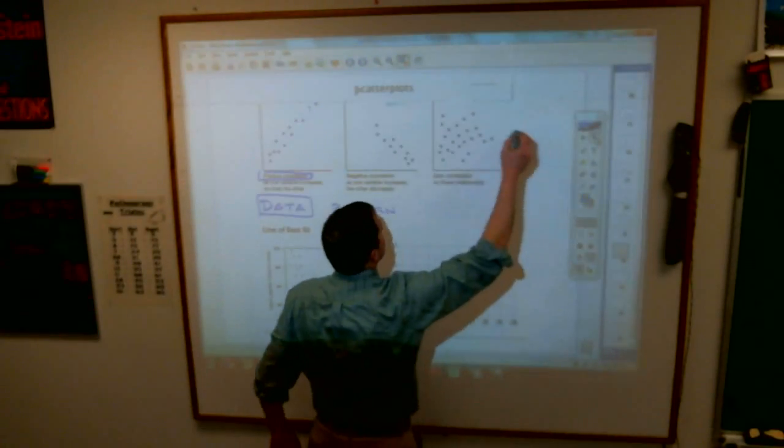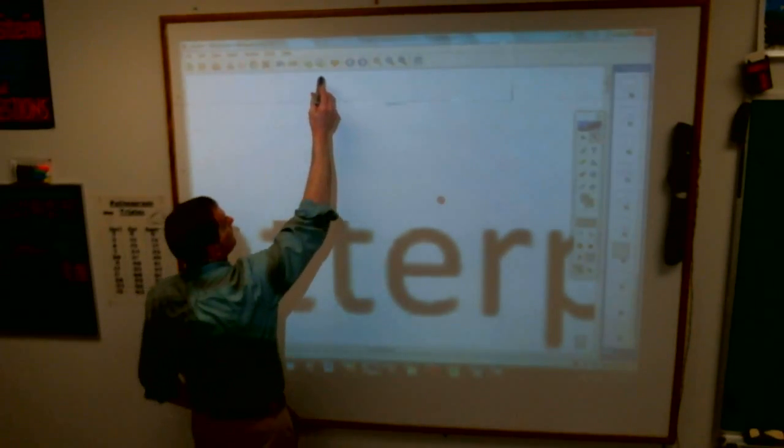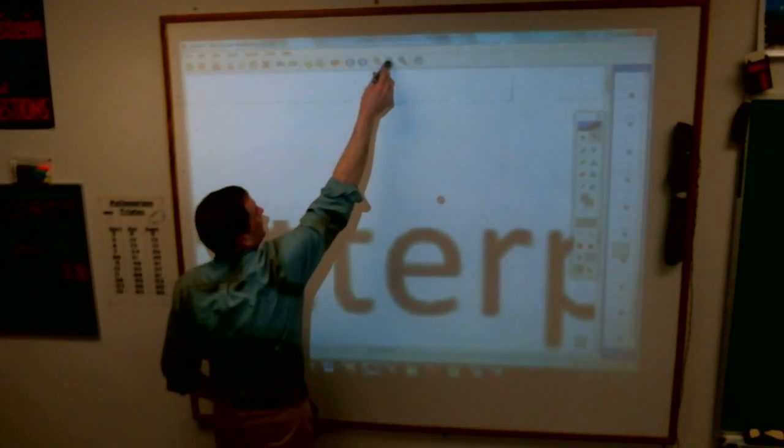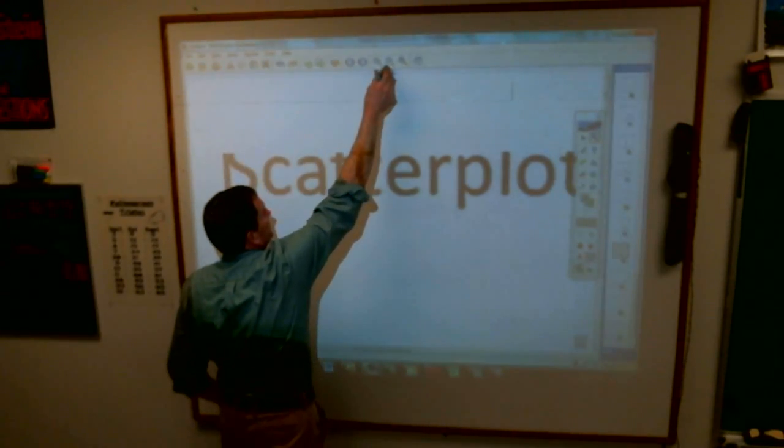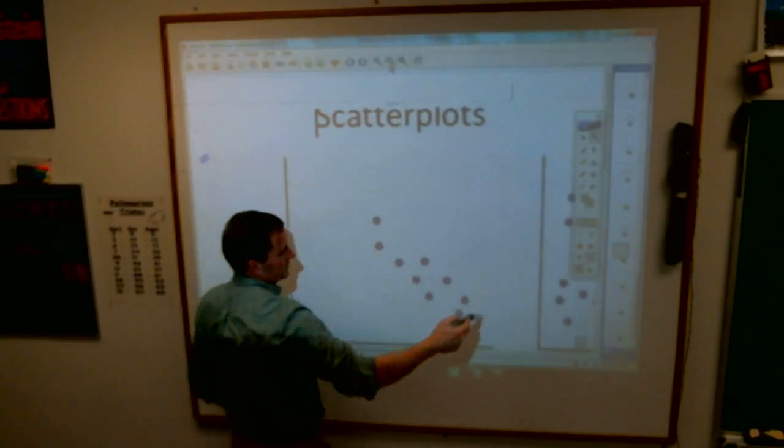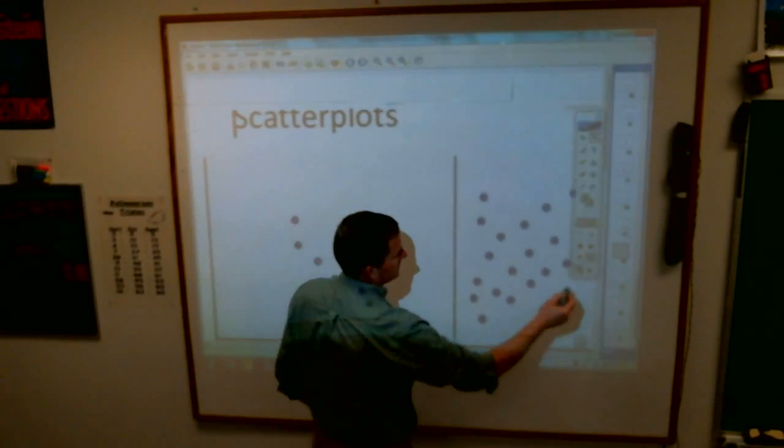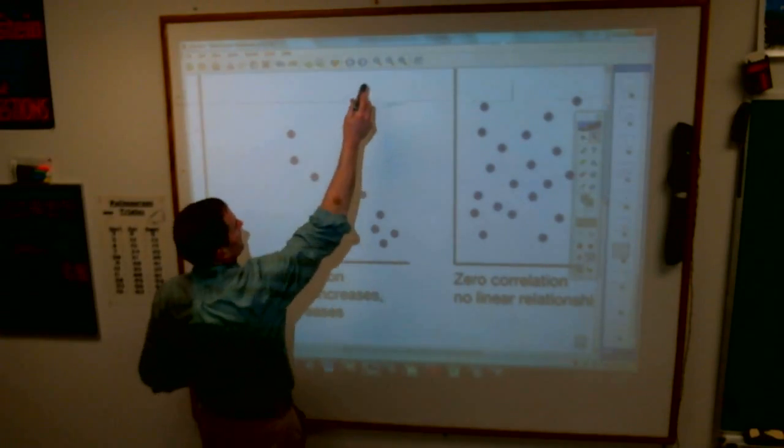If it goes downhill like that, that would be a negative correlation. I'll find it here. Like this bad boy right here. Notice how those dots all tend to go down.